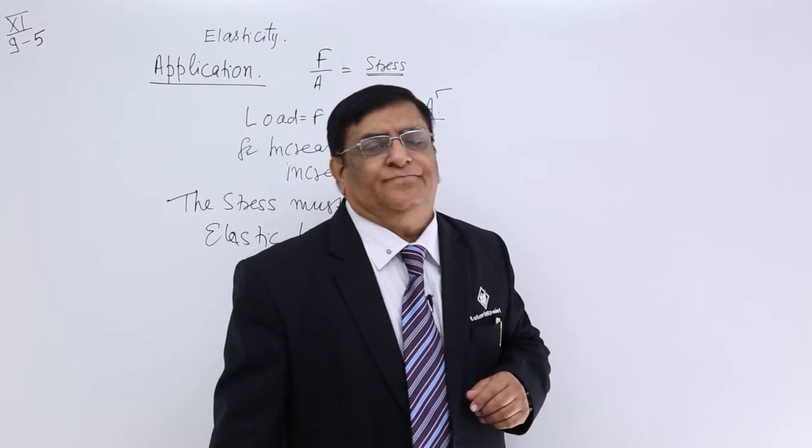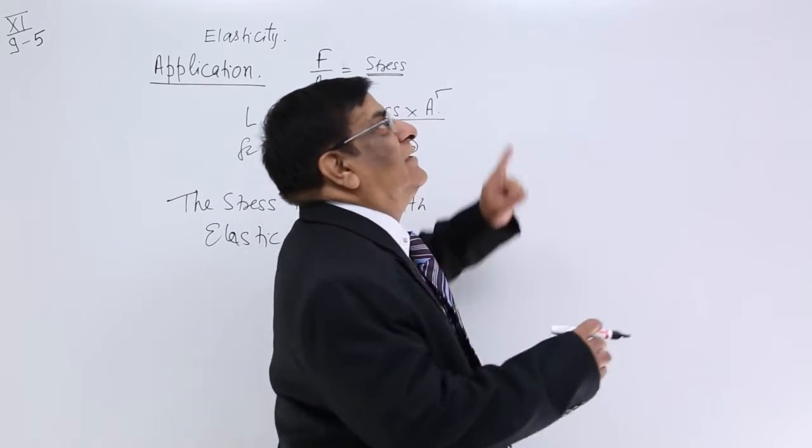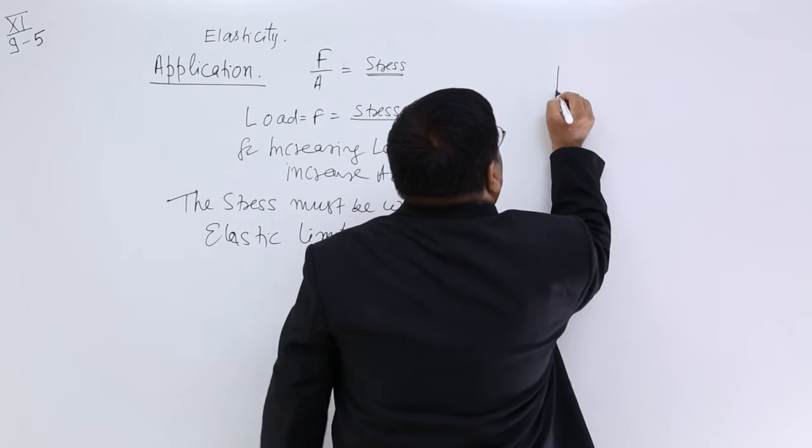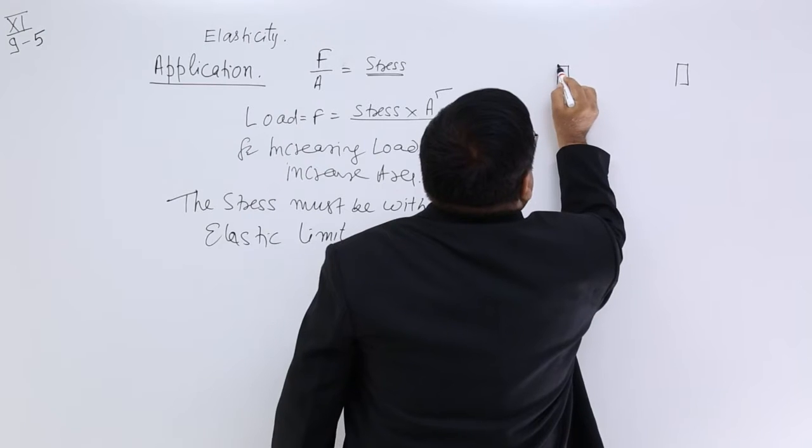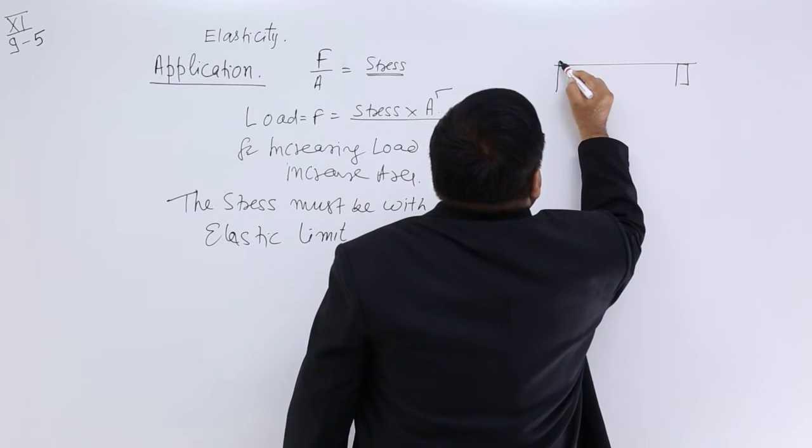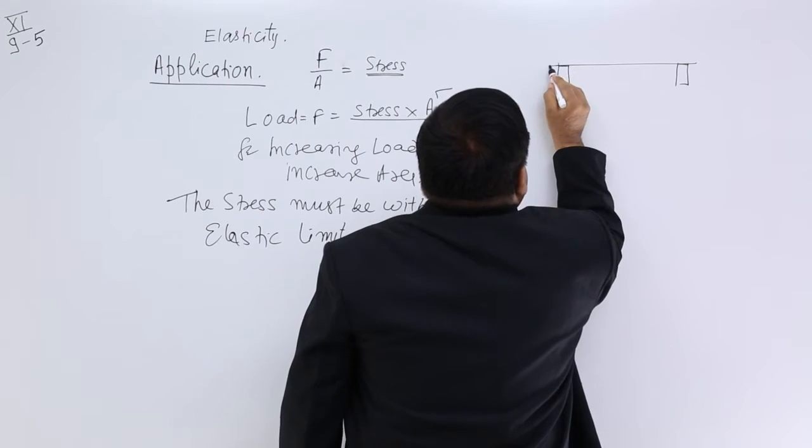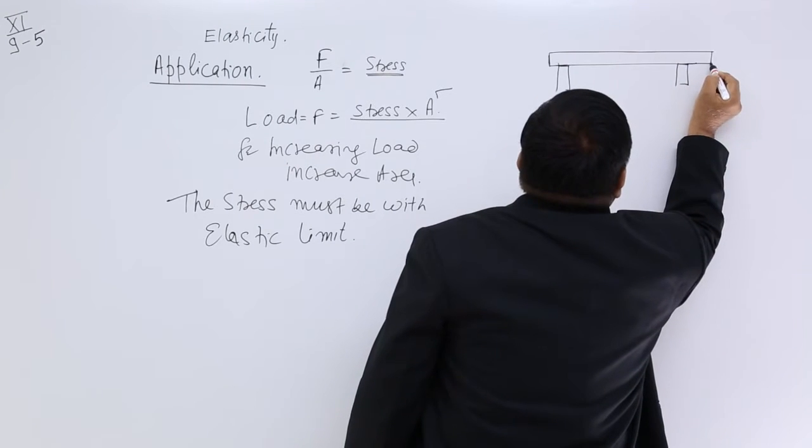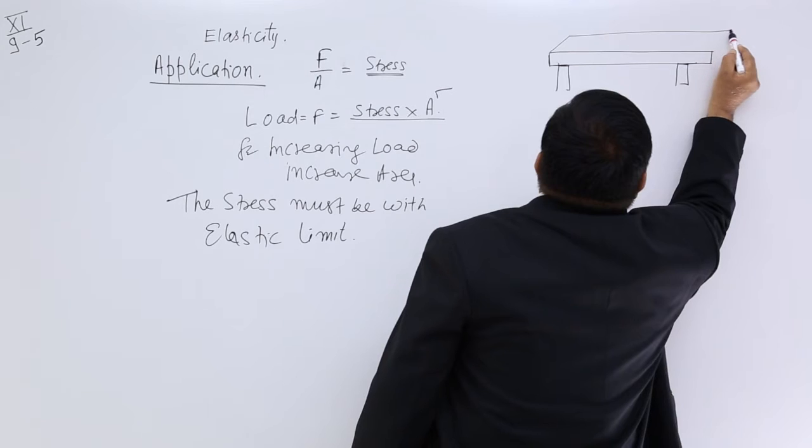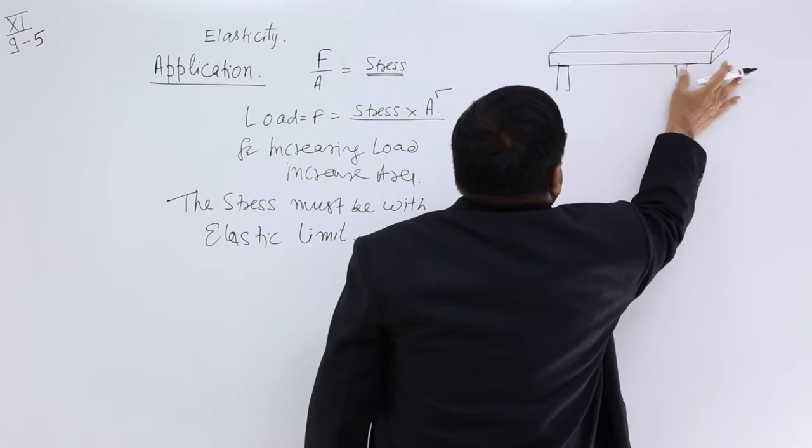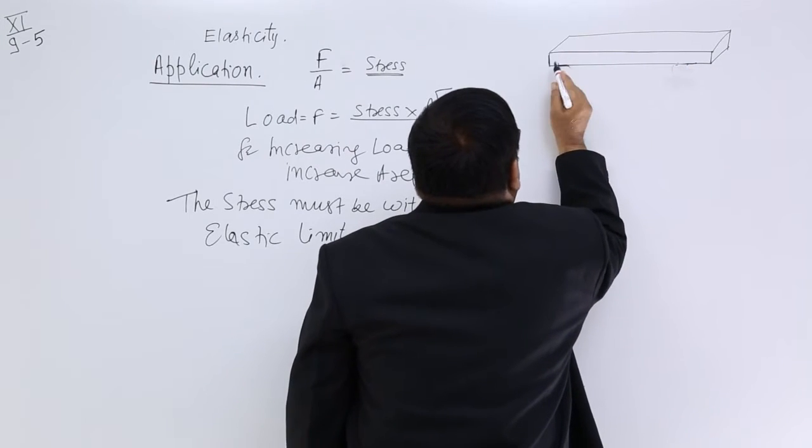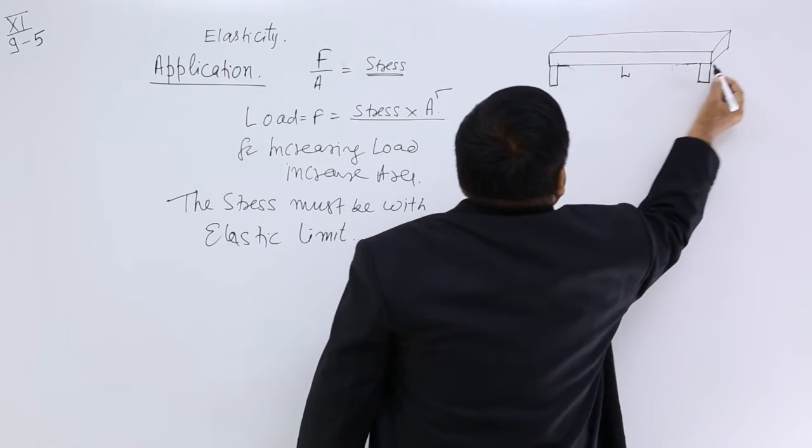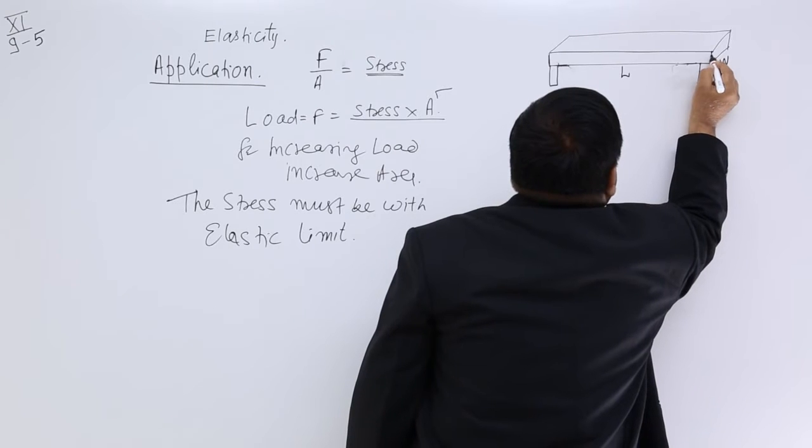Another example, a very common example in our house is we are using channels to make the roof. And that takes the load. In the bridges also, we have these two pillars. And on this pillar, we put here one structure. Let us say this is a metal plate which has got certain thickness, certain width, and certain length between these two. I will make the length just flushing with the ends. So it has length, it has width, and it has thickness T.